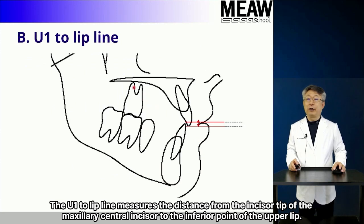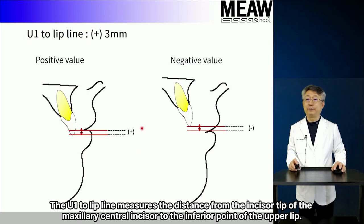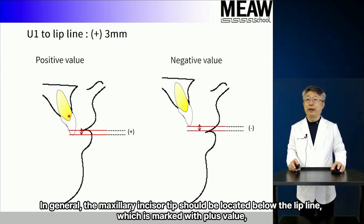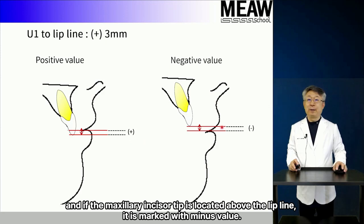The onto-lip line measures the distance from the incisor tip of the maxillary central incisor to the inferior point of the upper lip. In general, the maxillary incisor tip should be located below the lip line, which is marked with a plus value. If the maxillary incisor tip is located above the lip line, it is marked with a minus value.